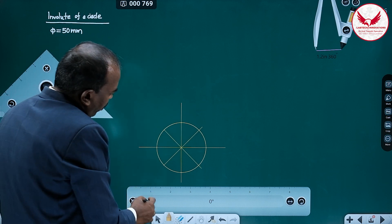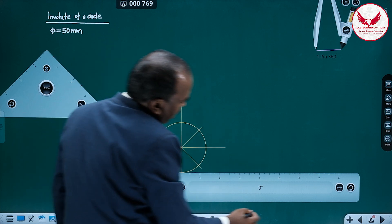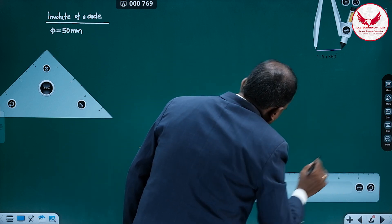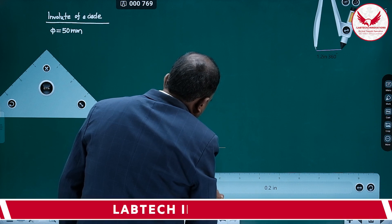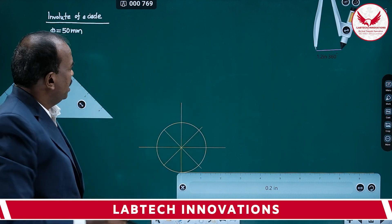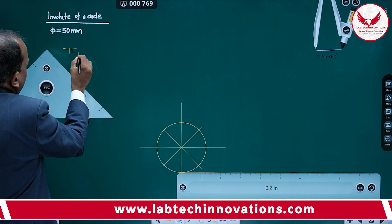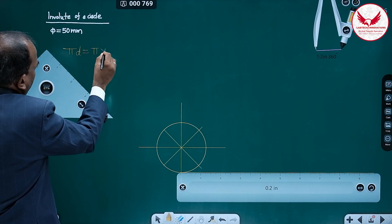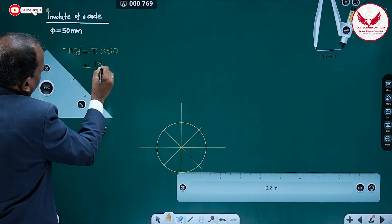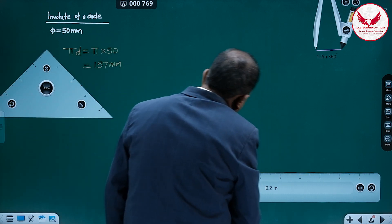Then, from the lowermost point, draw the tangent. Draw the tangent — it will be like this. And on that tangent, mark the distance equal to 157mm. This 157mm is equal to 8 equal parts. If the diameter is 50mm, the circumference of a circle is πd, and πd is π into 50. And π is 3.14, so we will get 157mm. This 157mm distance we have to mark on the lowermost tangent at the circle.